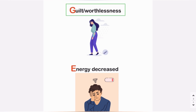G for guilt or worthlessness. Patients with depression have a constant feeling of guilt and worthlessness. E for energy decreased. Patients with depression have low energy and find it difficult to get up and do their tasks.